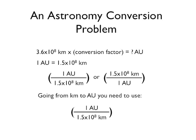Since you are converting from kilometers to astronomical units, you need to use one astronomical unit divided by 1.5 times 10 to the 8th kilometers.